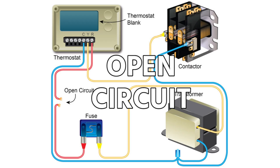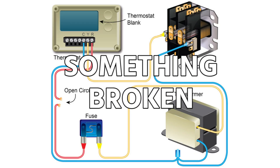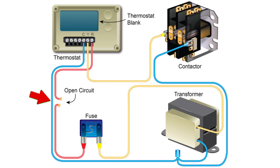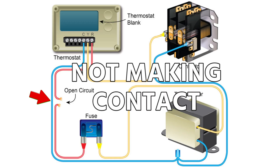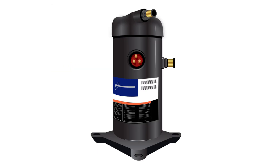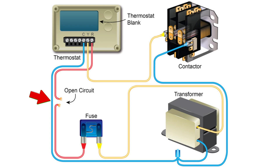An open circuit is a case where you have something broken, generally speaking. So you'd have a wire and that wire has a break in it, so it's not making contact. In order for anything to be energized — whether it's something simple like a contact or even a compressor — you have to have a path through that load that allows electrons to move through it. And when that path is broken,